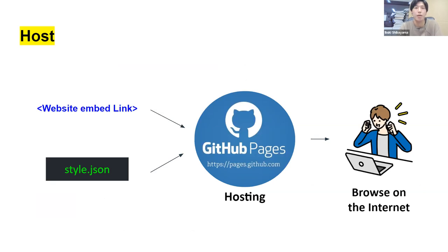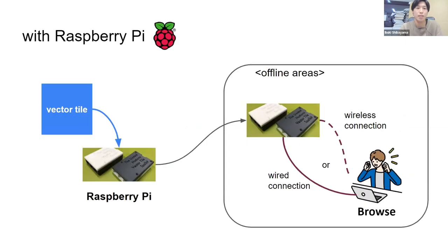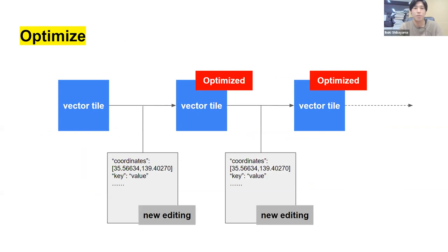In the hosting step, maps are made available on the internet — for example, using GitHub Pages. Raspberry Pi can also be used as a server with vector tile data loaded onto it, allowing maps to be viewed in an offline environment via PC or smartphone, wired or wireless. Finally, in the optimizing step, you fine-tune the map information and make various adjustments. By repeating optimization, map information becomes more suitable for your purposes.